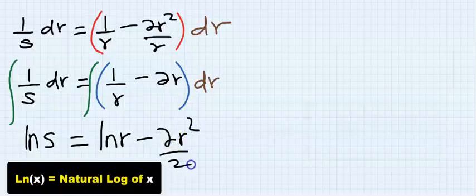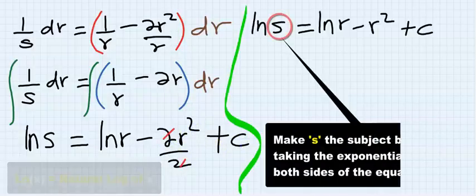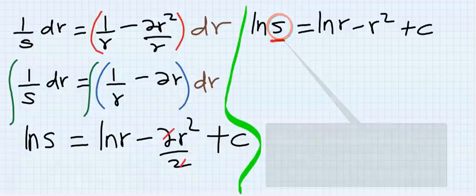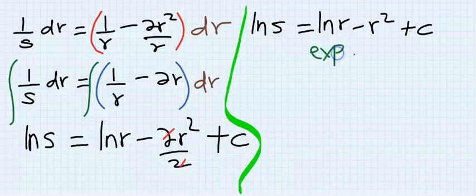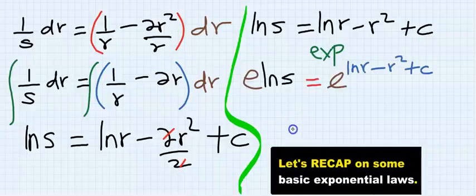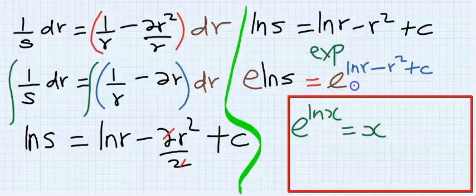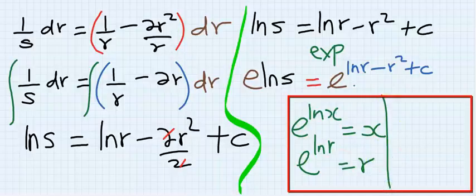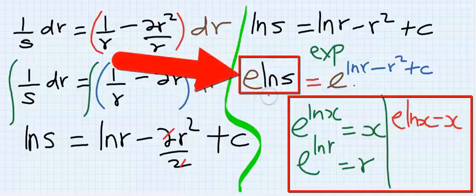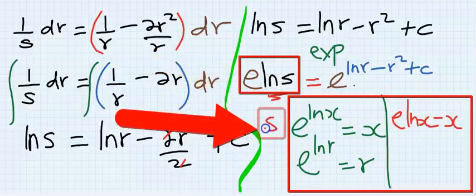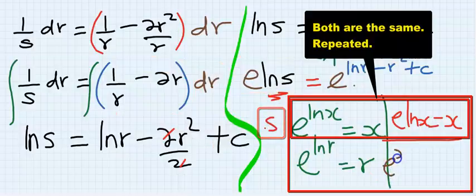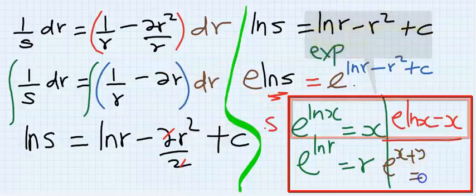Next, make s the subject. Take exponential of both sides. I want you to remember that exponential of ln x is equal to x, so if I have exponential ln r, it's going to give me r. Also, exponential of x plus y is the same thing as exponential y times exponential x.